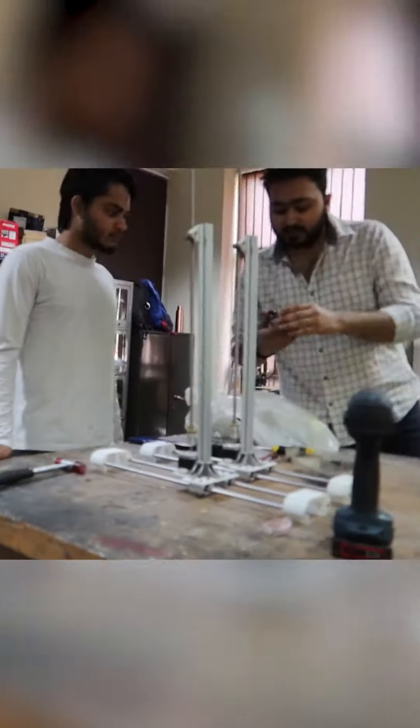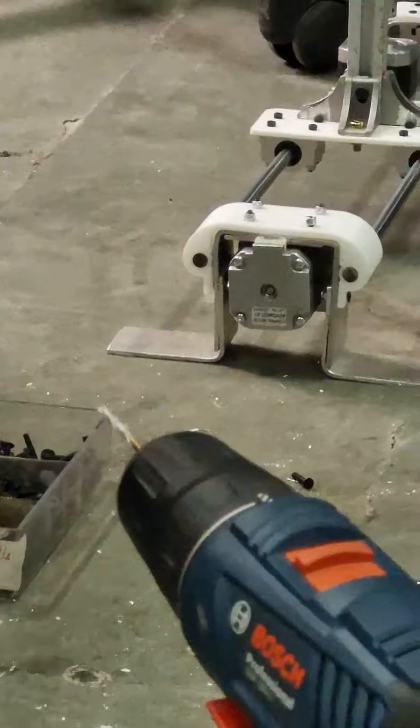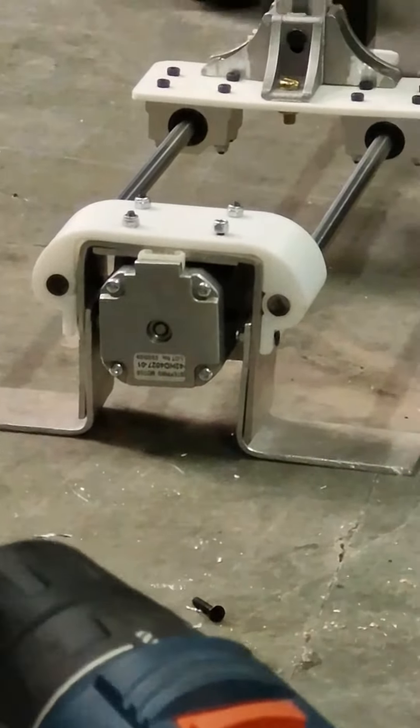After the first stage was done, Pranav told us that we needed aluminium clamps for fixing all of the structure to the base and a special pulley.